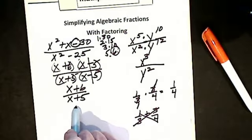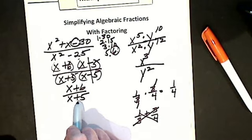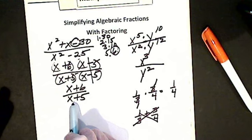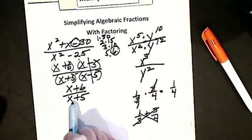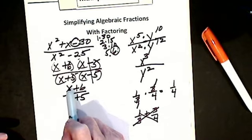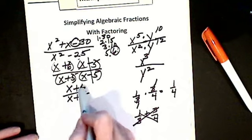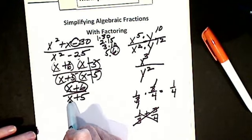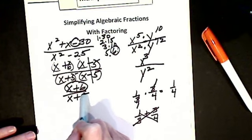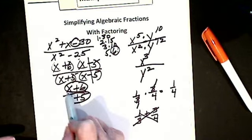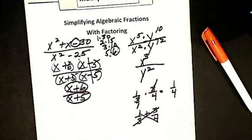Then I look at my answer to see if I can cancel or factor anything else. The question to ask: if there are factors, I can; if there are terms, I cannot. x plus 6 — that's a term plus a term; together they could be considered a factor, but I cannot cancel my x's because they are terms.